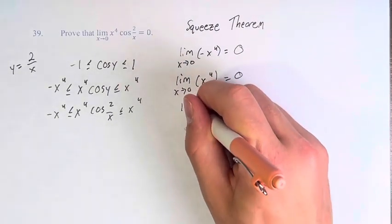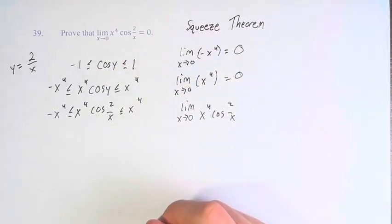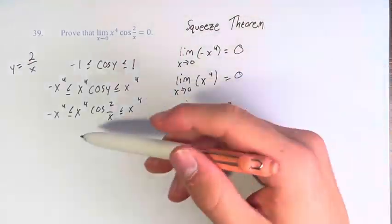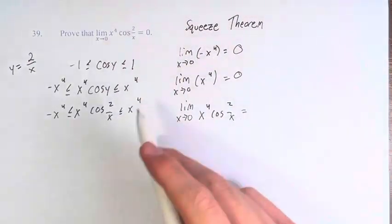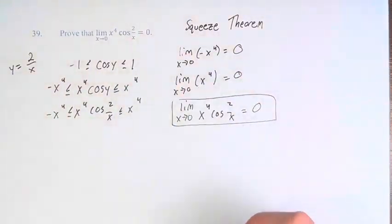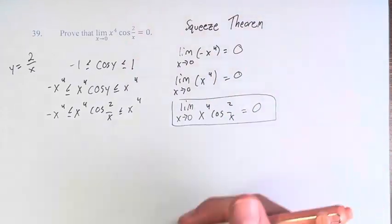we can say that by the squeeze theorem, the limit as x approaches zero of this function equals the limit of the two functions it's squeezed between, which is zero. This is by the squeeze theorem, which works as we just stated.